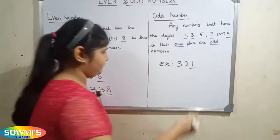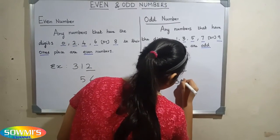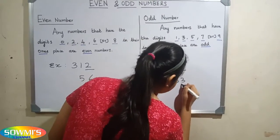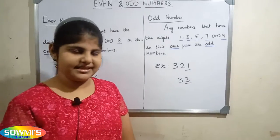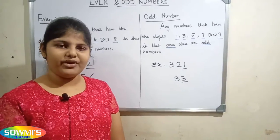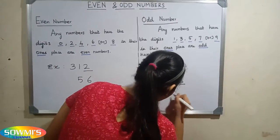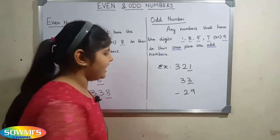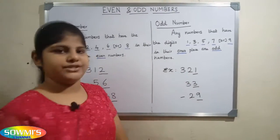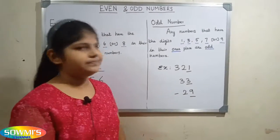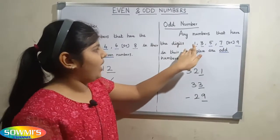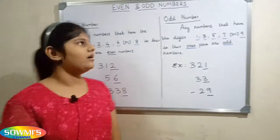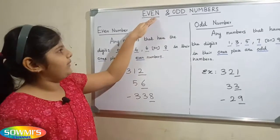Let us take another example: 33. Here the number ends with 3, so this is an odd number. Let us take one more example: -29. You can see the number ends in 9, so this is an odd number. Always the odd number ends with 1, 3, 5, 7, or 9. Hope you friends all understood about even and odd numbers.